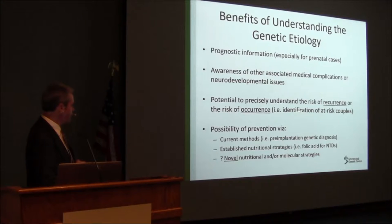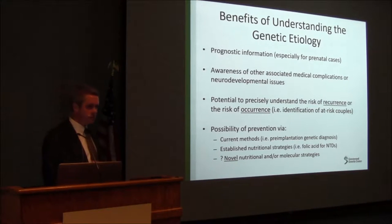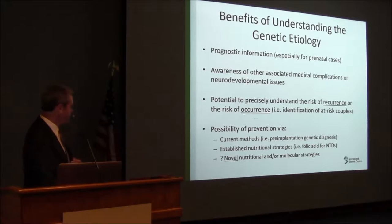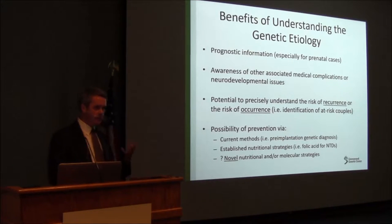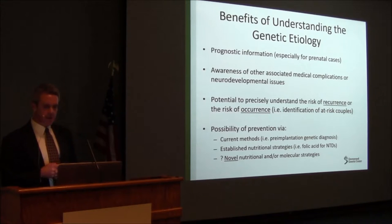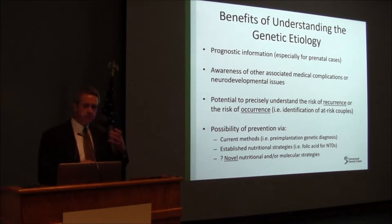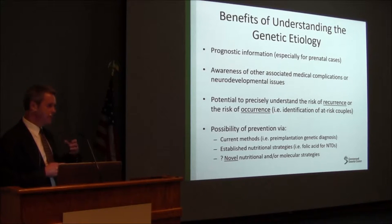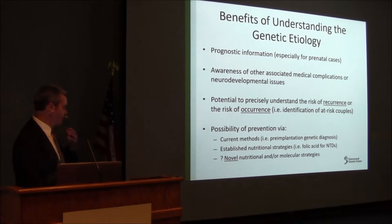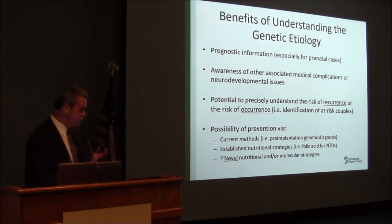Genetic information could help us very precisely understand the risk of recurrence in families where there has been a child — or more than one child — with a congenital malformation. But it's also interesting to think about whether we could identify at-risk couples who have no idea they have an increased genetic risk to have a baby with a major congenital malformation. And then there's the whole issue of prevention — once a baby is born with a congenital malformation you can't reverse that unless you do surgery, so the question is: could we identify at-risk couples and use preventive strategies?